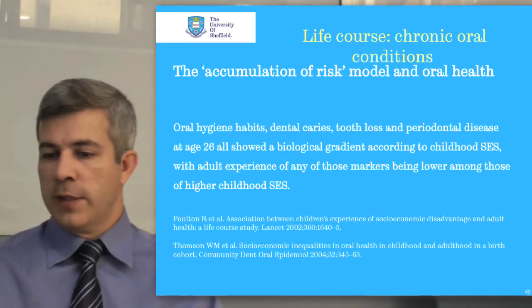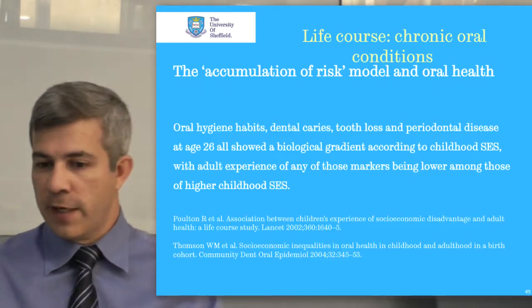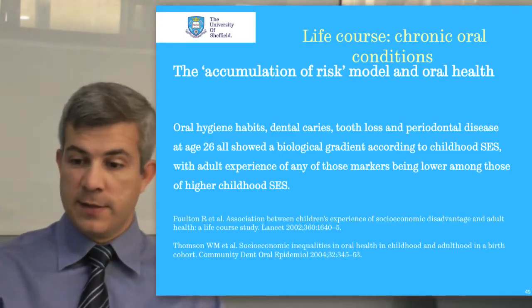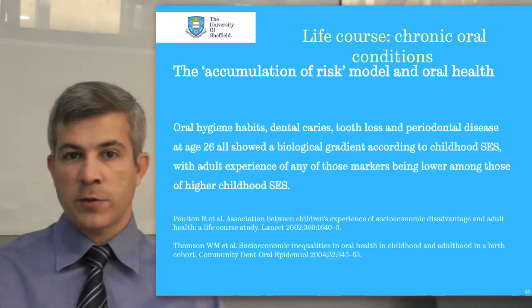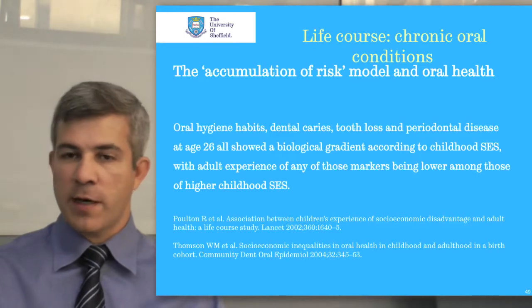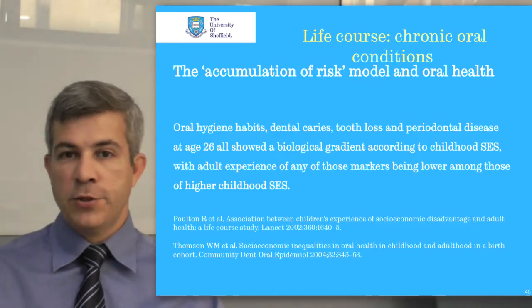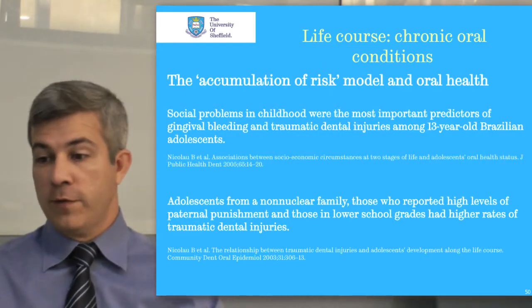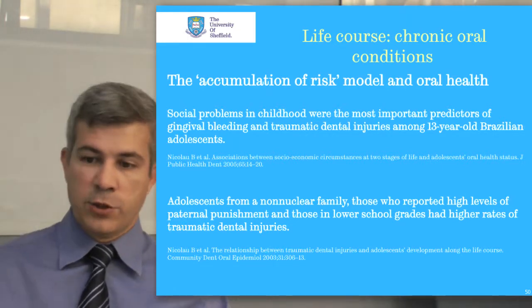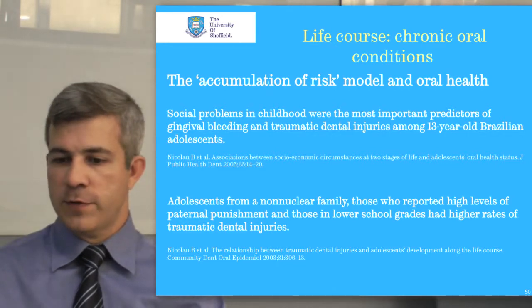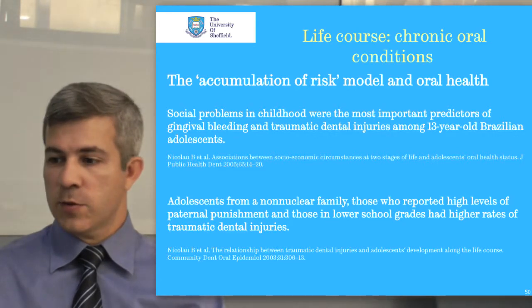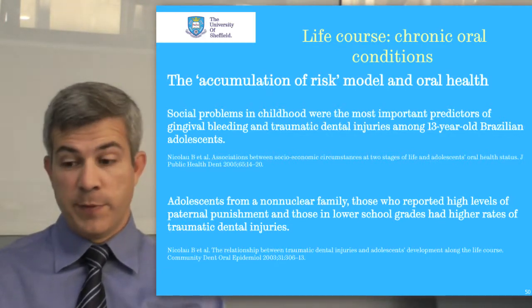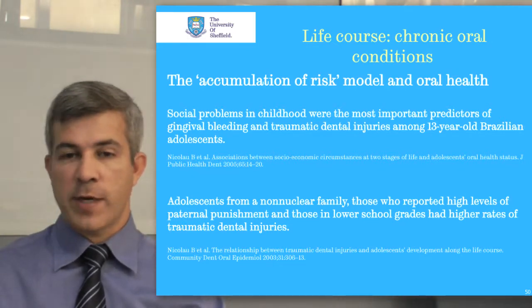The accumulation of risk model and oral health is supported by investigations as well. For example, oral hygiene habits, dental caries, tooth loss, and periodontal disease at age 26 showed a biological gradient according to childhood socioeconomic status, with adult experience of any of those markers being lower among those of higher childhood socioeconomic status. Additionally, social problems in childhood were the most important predictors of gingival bleeding and traumatic dental injuries among 13-year-old Brazilian adolescents. Adolescents from non-nuclear families, those who reported high levels of paternal punishment, and those in lower school grades had high rates of traumatic dental injuries.